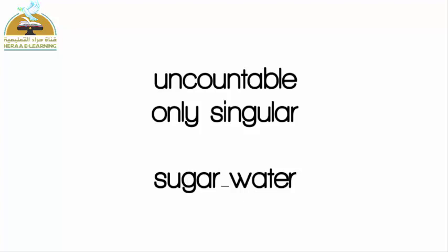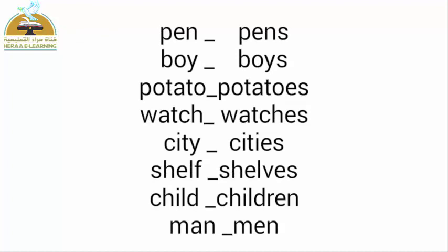نشوف بعض أشكال الجمع: pen - pens، boy - boys، potato - potatoes، city - cities هزفنا الـ y وأضفنا ies. shelf - shelves، child - children، man - men. بعض الكلمات زي pen وboy لفناهم s، وبعضها زي city حذفنا الـ y وأضفنا ies، وبعضها اتغيرت تماماً.